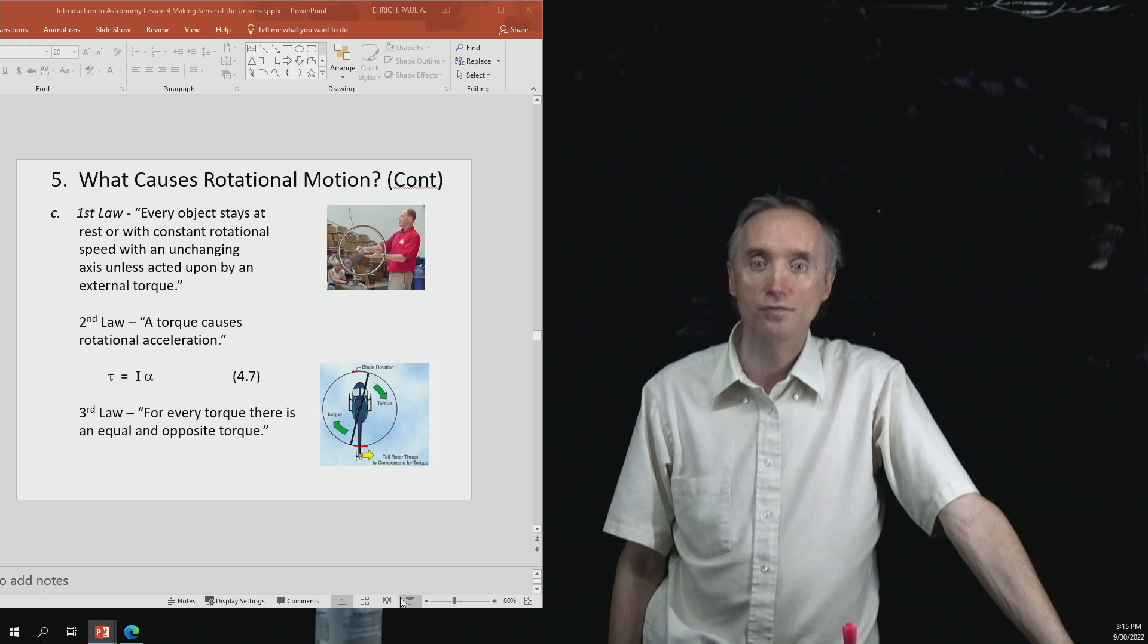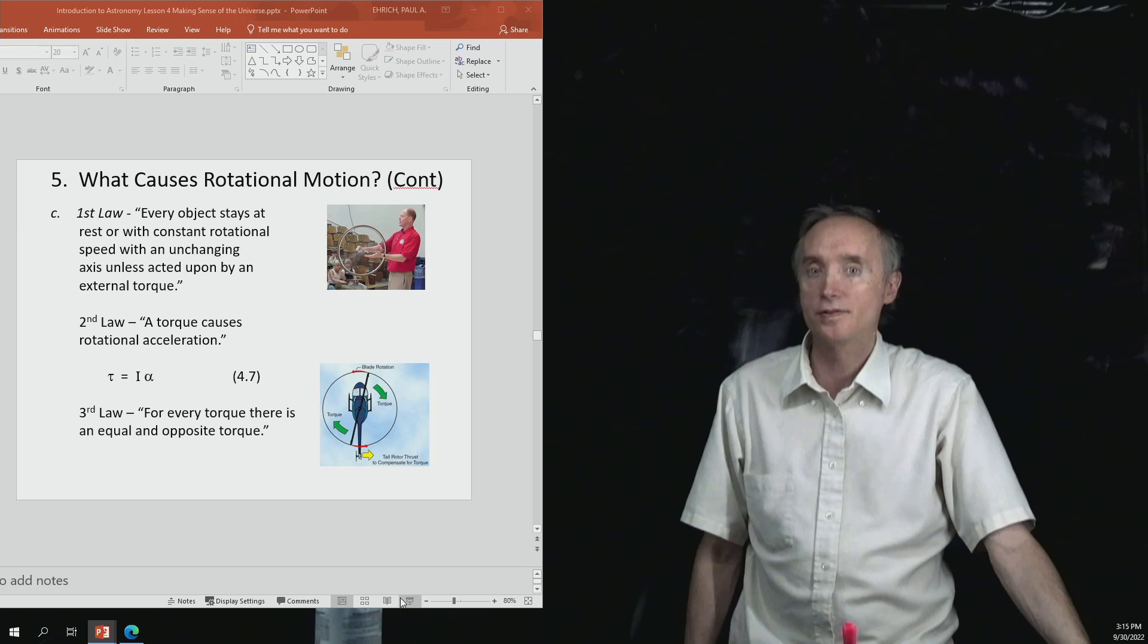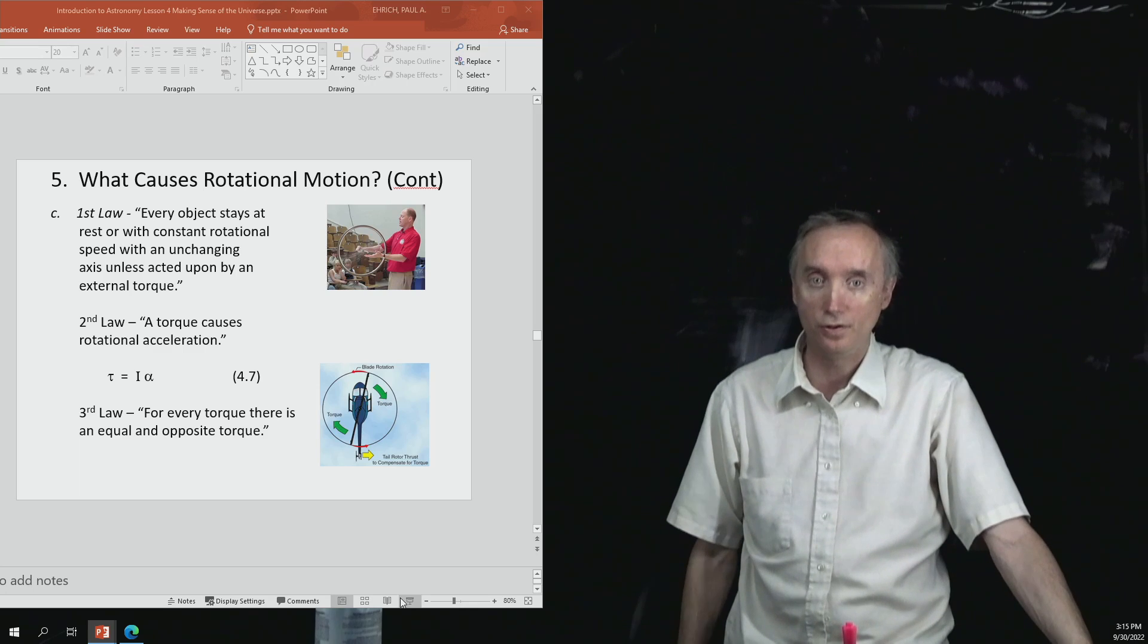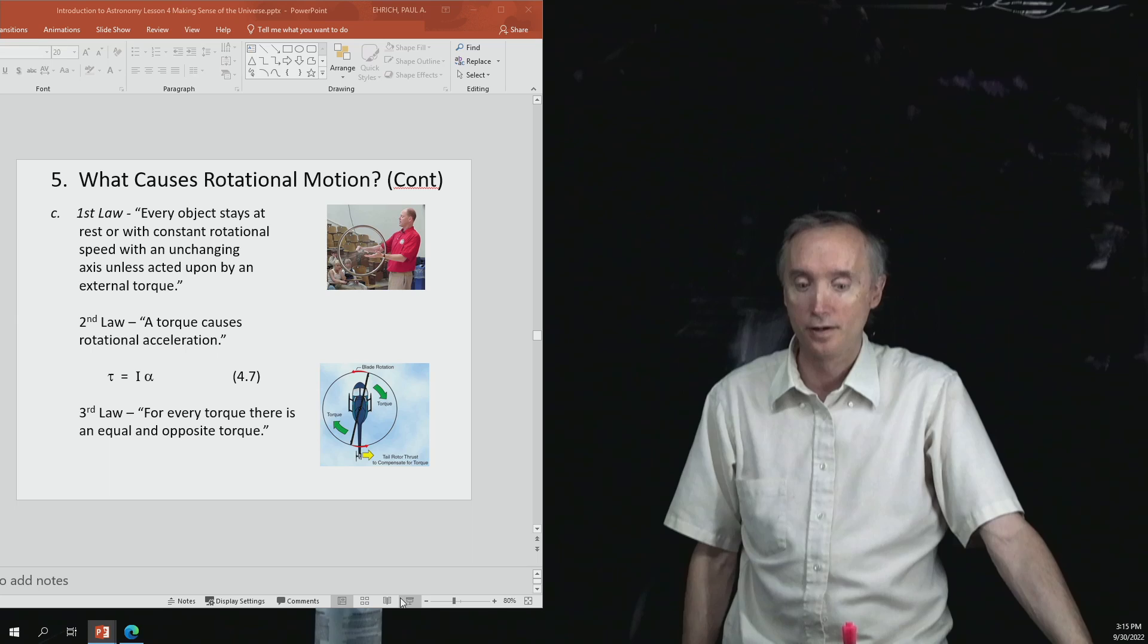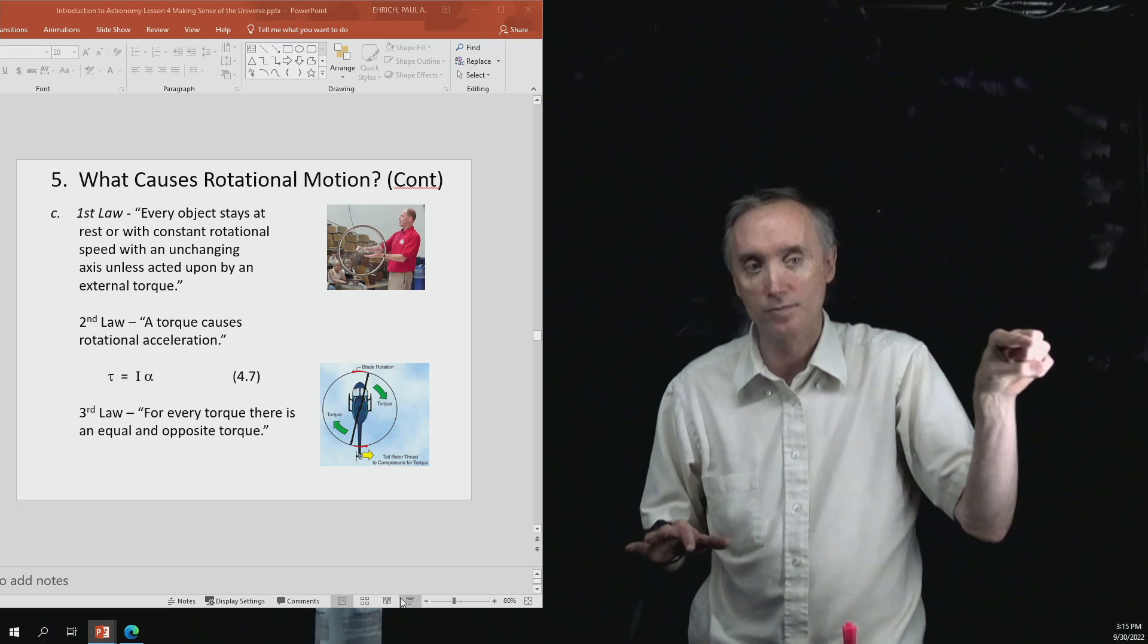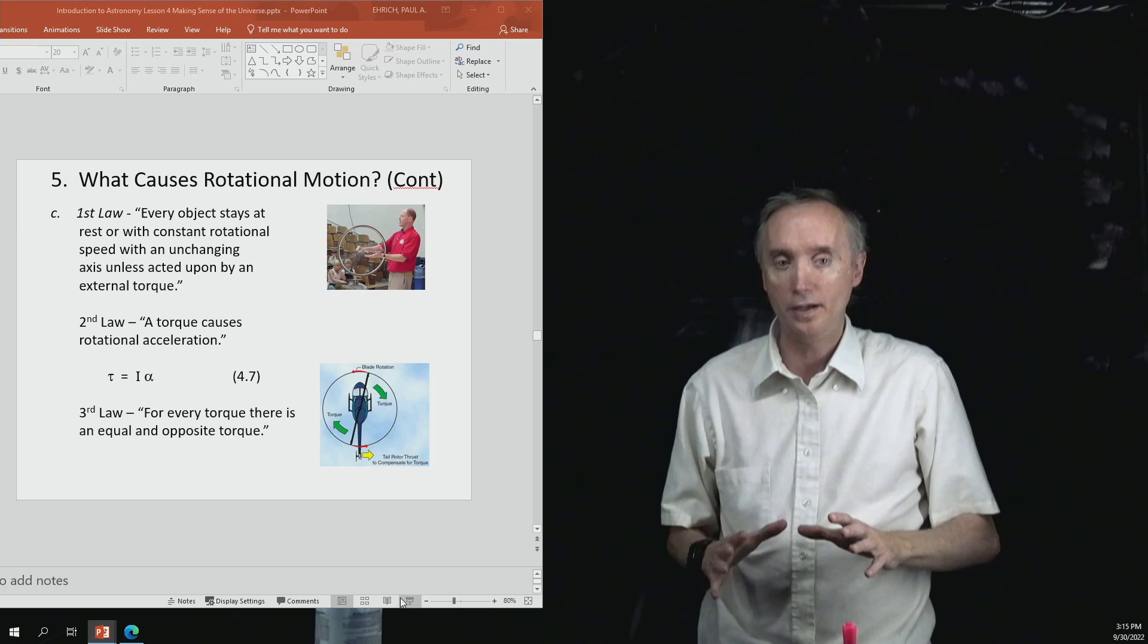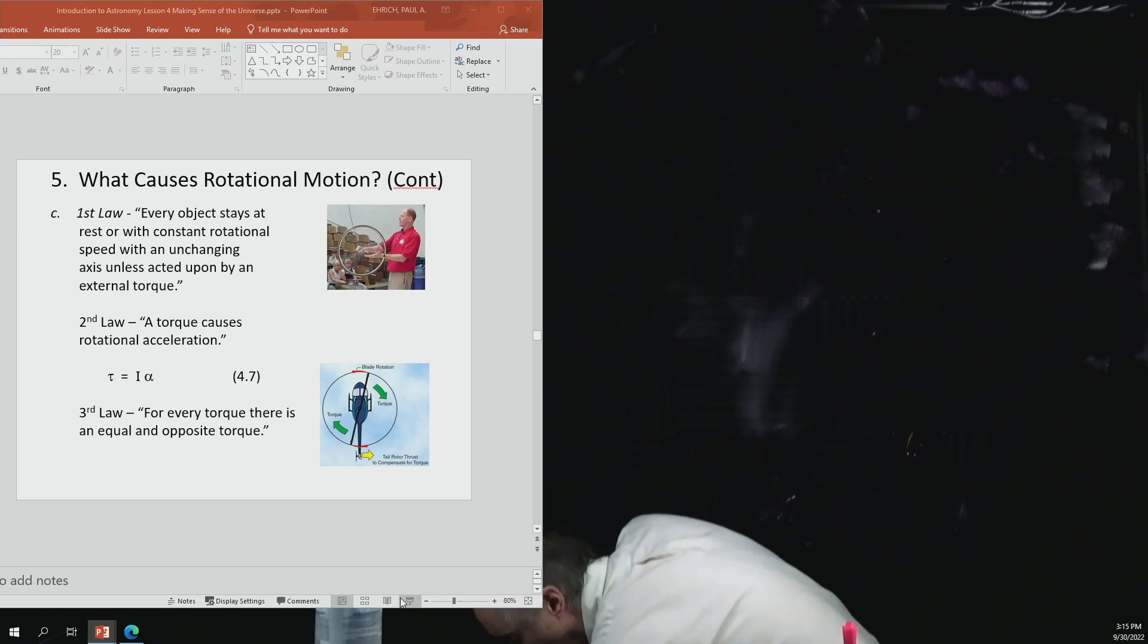So his first law of motion for things that are spinning says that every object that is spinning at a certain speed will continue to want to spin at that certain speed forever and ever. But there's something in addition. So when it was something that was moving in a straight line, it would want to continue to move in a straight line. What would it be for something that is rotating?